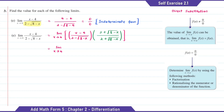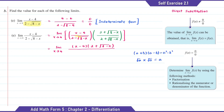So for the numerator part, we're just left with (x minus 4) times (2 plus square root of 8 minus x). As for the denominator part, 2 squared is equal to 4, then we're going to minus with 8 minus x. So for the denominator part, 4 minus 8 plus x, therefore the answer will be negative 4 plus x.